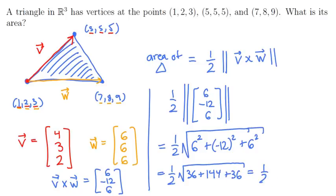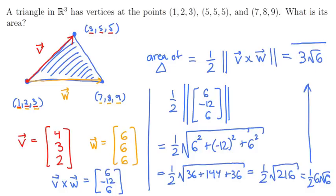And if you'd like, we can clean that up. That's 36 times 6. So we can also write this as 1/2 of 6√6. And then canceling the 1/2, we're going to get 3√6. And that's the area of the triangle in 3D space.